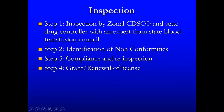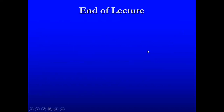The steps for obtaining a license are: first, joint inspection by CDSCO and the State Drug Controller along with an expert from the State Blood Transfusion Council. Second, identification of non-conformities by the team of experts during the inspection. Third, the blood bank submits compliance and a re-inspection is done. Finally, after compliance submission, there is grant or renewal of the blood bank license. Thank you very much.